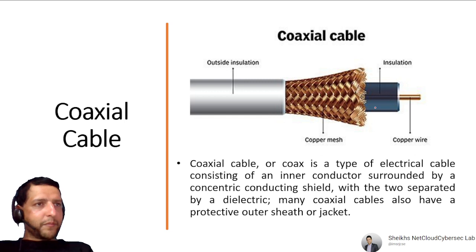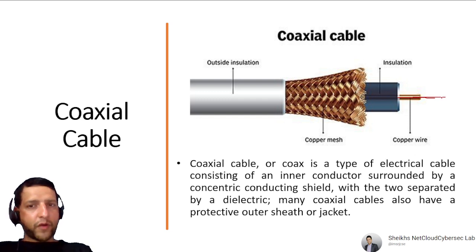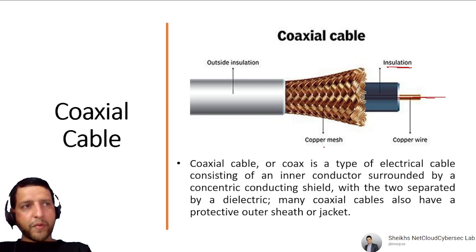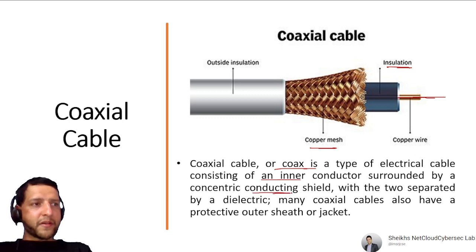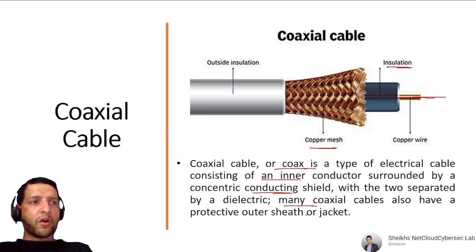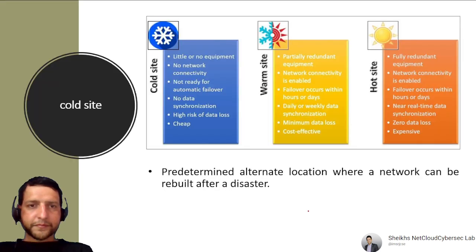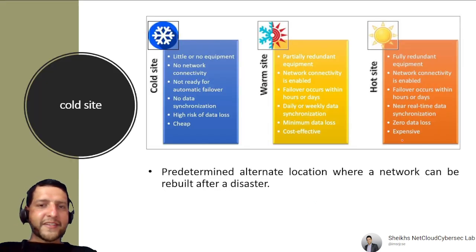Coaxial Cable (coax) derives its name from the conductors sharing the same axis. It consists of an inner copper conductor, surrounded by insulation, a copper mesh shield, and an outer insulating jacket. It is a type of electrical cable where the inner conductor is surrounded by a concentric conducting shield, with the two separated by a dielectric.